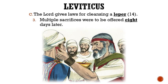Thirdly, multiple sacrifices were to be offered eight days later. On the eighth day, the healed leper was to offer two male lambs and one female lamb of the first year with both fine flour and oil for a trespass offering, a wave offering, and a sin offering. Blood was then applied to the leper's right ear, right thumb, and right big toe. Interestingly, when they get into the land of Canaan, the priest would even have authority to condemn an entire house for a certain number of days if leprosy had spread in it. Therefore, he acted just as much like a physician as he did a priest.